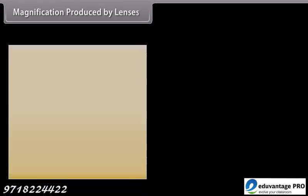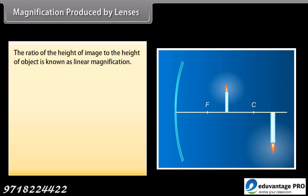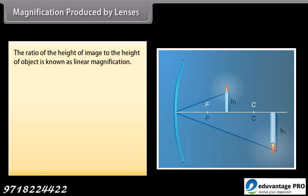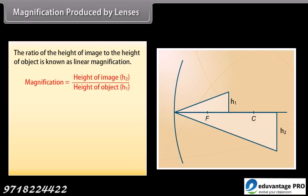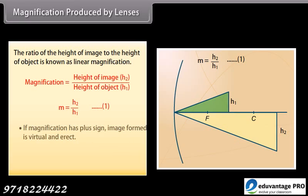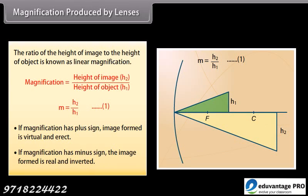Magnification: the ratio of the height of the image to the height of the object is known as linear magnification. Magnification M = h2/h1, where h2 is the height of the image and h1 is the height of the object. If magnification has a plus sign, the image formed is virtual and erect. If magnification has a minus sign, the image formed is real and inverted.